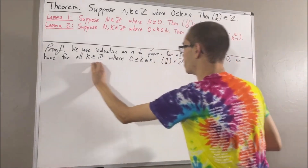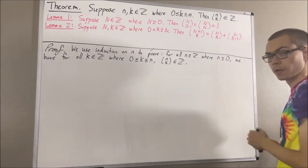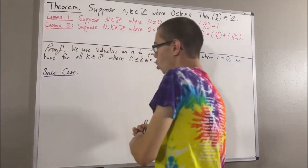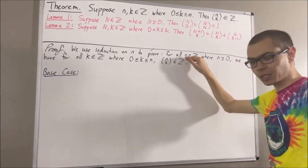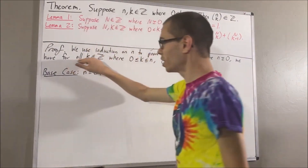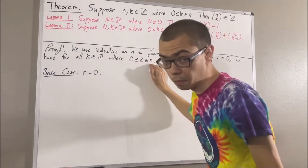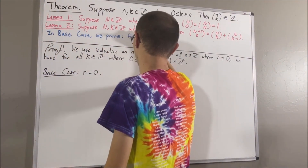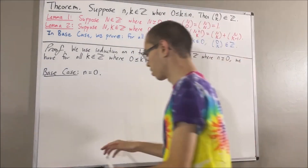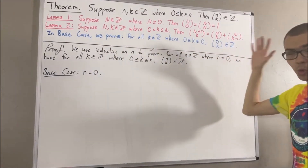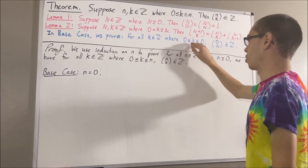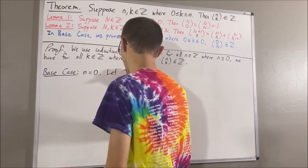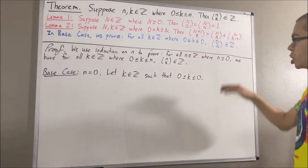So, we want to show that this is true for all integers n greater than or equal to 0, and we're going to show that by induction. So, let's start with the base case. In the base case, we're trying to prove that this is true in the case where n is equal to 0, which means we want to prove for all integers k where 0 is less than or equal to k is less than or equal to 0. Since we're trying to prove a statement about all such integers k, let's give ourselves an arbitrary integer k such that 0 is less than or equal to k is less than or equal to 0. The whole goal from here is to show that 0 choose k is an integer.